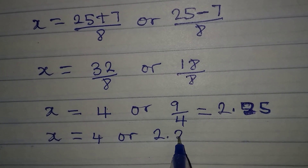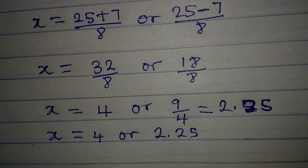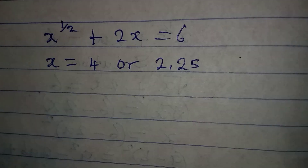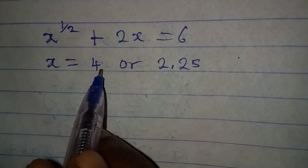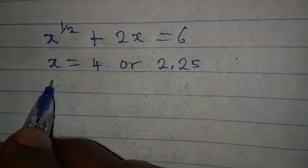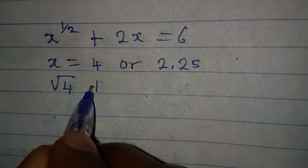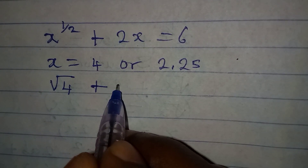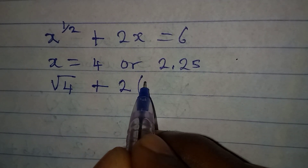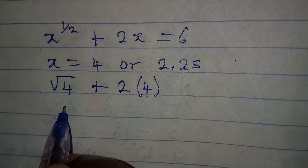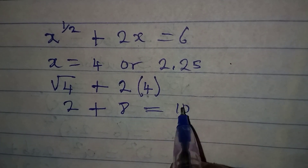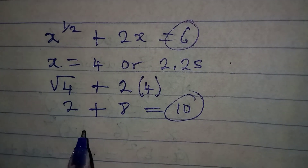Let's put these back into the original equation to check which one satisfies it. Testing x equals 4: we get 4 to the power of one-half plus 2 times 4, which is the square root of 4 plus 8. That gives 2 plus 8 equals 10, and 10 is not equal to 6, so x equals 4 does not satisfy the equation.